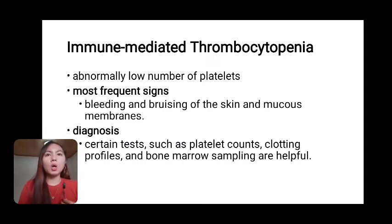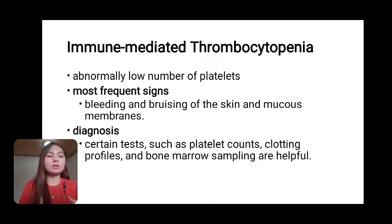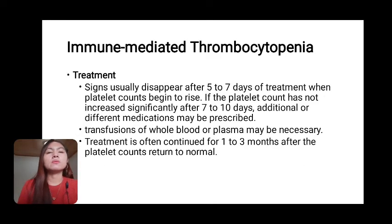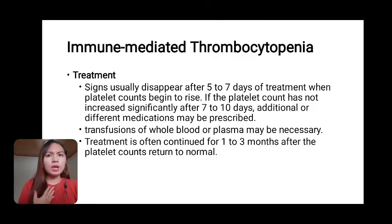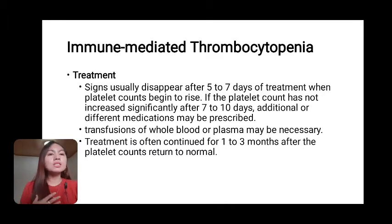Immune-mediated thrombocytopenia is an abnormally low number of platelets, meaning clotting does not occur correctly. The most common signs are bleeding and bruising of the skin and mucous membranes. Diagnosis is usually made based on signs and response to treatment rather than blood tests alone, though platelet counts, clotting profiles, and bone marrow samples are helpful. Signs usually disappear after 5 to 7 days of treatment when platelet counts begin to rise. If counts have not increased significantly after 7 to 10 days, additional medication may be prescribed. If blood loss is life-threatening, transfusions of blood or plasma may be necessary. Treatment is often continued for 1 to 3 months after platelet counts return to normal.